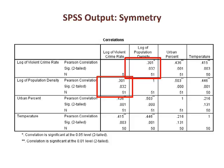Notice that values on one side of the table are the same as on the other side of the table. For example, the correlation between the log of the violent crime rate and the log of population density is the same as the correlation between the log of population density and the log of the violent crime rate. This feature is called symmetry. It does not matter which of the two variables we designate as independent and dependent — we will get the same result. Later in the video series, we encounter statistics not having symmetry.